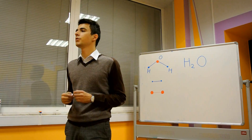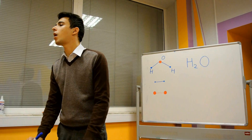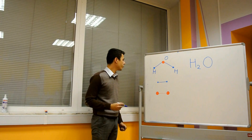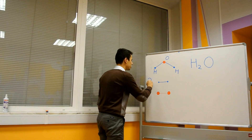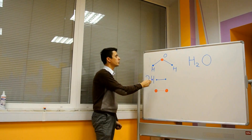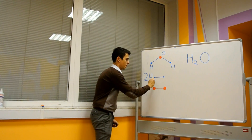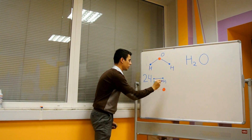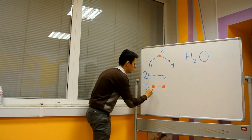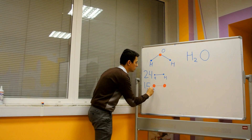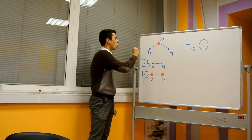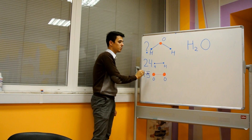Now I would like to give you a brief task, but please don't give me your answers immediately — write them on the sheets of paper. Here we have 24 molecules of hydrogen. Each molecule of hydrogen gas consists of two hydrogen atoms, and 15 molecules of oxygen gas, each consisting of two oxygen atoms. So the question is: how many water molecules can be produced from these molecules?